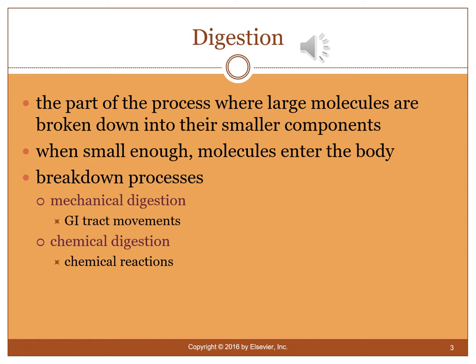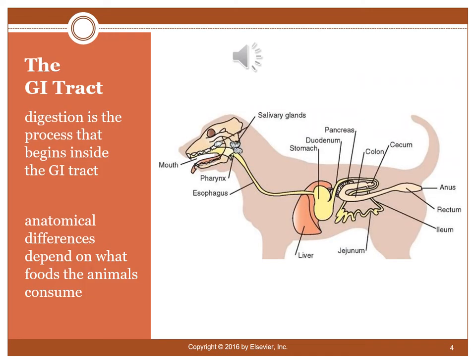Cats, dogs, and ruminants lack amylase in their saliva. The most common form of chemical reaction occurs in the stomach with enzymes and acids. The gastrointestinal tract is where digestion takes place, and anatomical differences depend on what the animal eats. Cats and dogs have one stomach; horses also have one stomach but are known as hindgut fermenters, fermenting cellulose products in their hindgut with bacteria. Humans, cats, and dogs may have done that in the past, and the cecum may be a vestigial remnant of that larger fermentation structure.